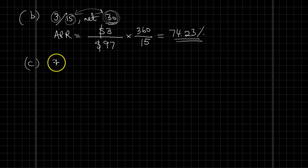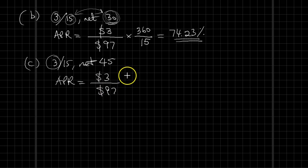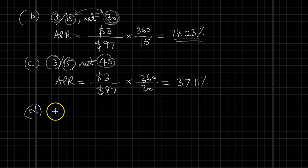The second contract was 3/15 net 45. In that occasion, the APR would be calculated as again $3 here divided by 97, and then times 360 over the difference between these two dates, which is 30 here. You would get a 37.11% difference here and cost.